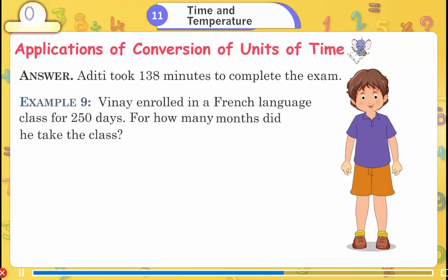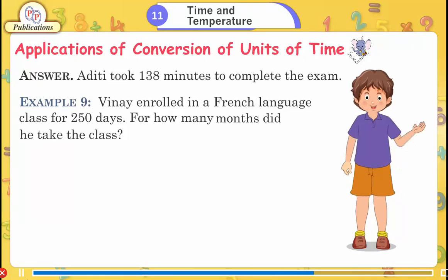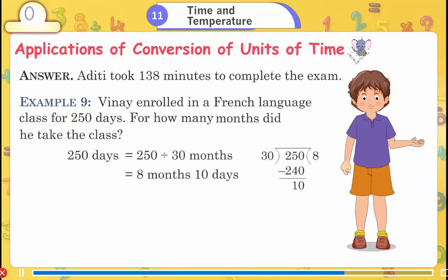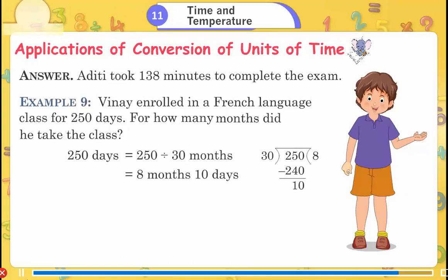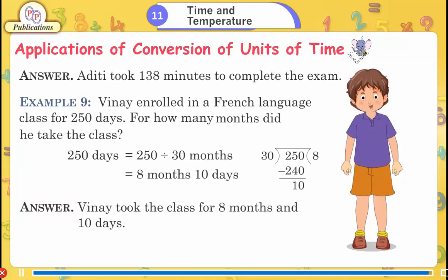Example 9: Vinay enrolled in a French language class for 250 days. For how many months did he take the class? 250 days = 250 ÷ 30 = 8 months and 10 days. Answer: Vinay took the class for 8 months and 10 days.